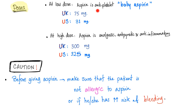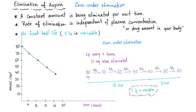At low dose, aspirin is anti-platelet. At high dose, aspirin is analgesic, anti-pyretic, and anti-inflammatory. How do you eliminate aspirin out of your body? It's called zero-order elimination — a constant amount is eliminated per unit time. The rate of elimination is independent of plasma concentration. Like every 4 hours, we are eliminating just 10 milligrams. Therefore, the T-half is variable: it took 16 hours to get to half the amount one time, but next time only 8 hours.